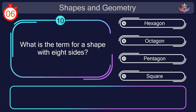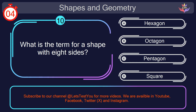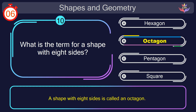Question number 10. What is the term for a shape with 8 sides? Your countdown started. 1, here we go. The correct answer is option B. Octagon. A shape with 8 sides is called an octagon.